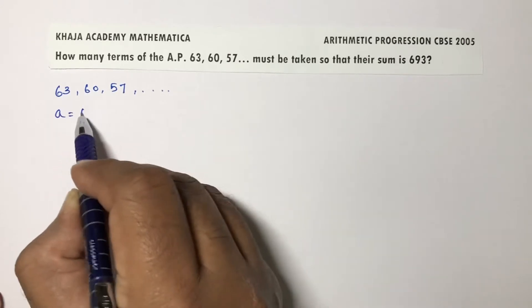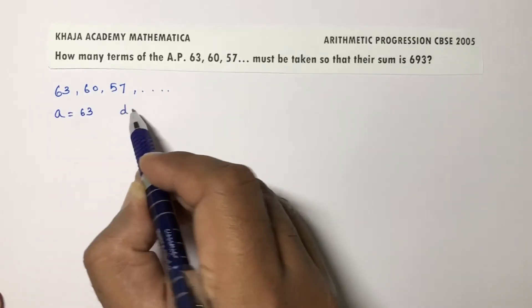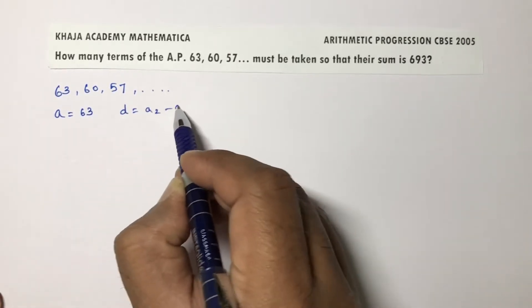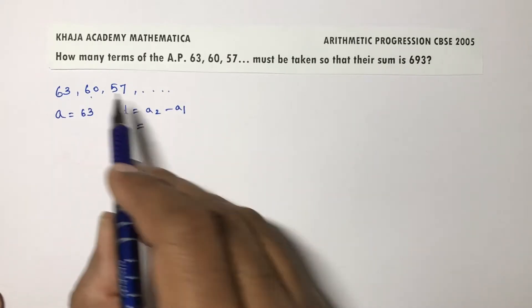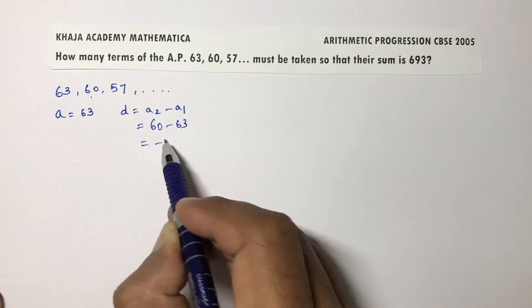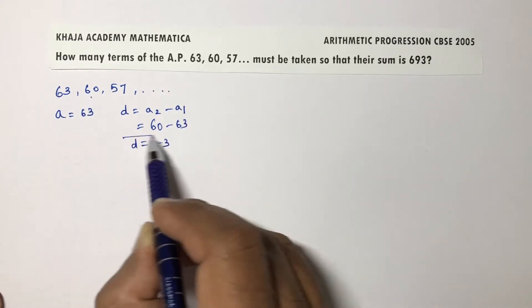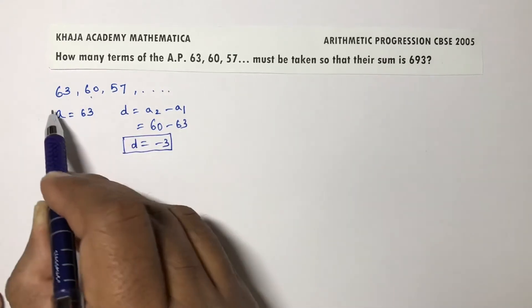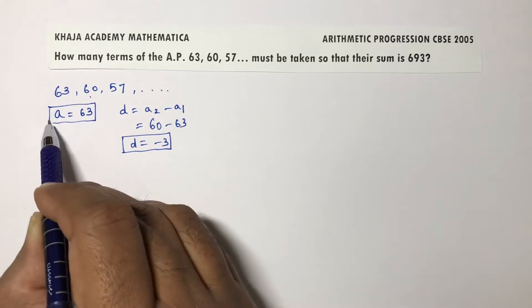In this, the first term is 63. Common difference is a2 minus a1. Second term is 60 minus 63, which is minus 3. So common difference is minus 3, and first term is 63.